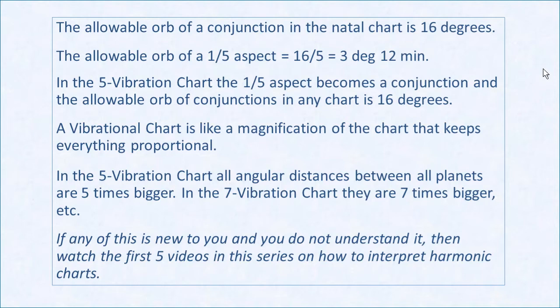Now, to review the orbs. The natal chart is the only real chart. The orb of an aspect is calculated by taking the denominator — also known as the frequency vibration or the harmonic — and dividing it into 16. So the orb for a one-fifth aspect is 5 into 16, which equals 3 and one-fifth, or 3 degrees 12 minutes. If you take that five vibration aspect and look at it in a five vibration chart, it turns into a conjunction with an orb of 16 degrees in that chart.